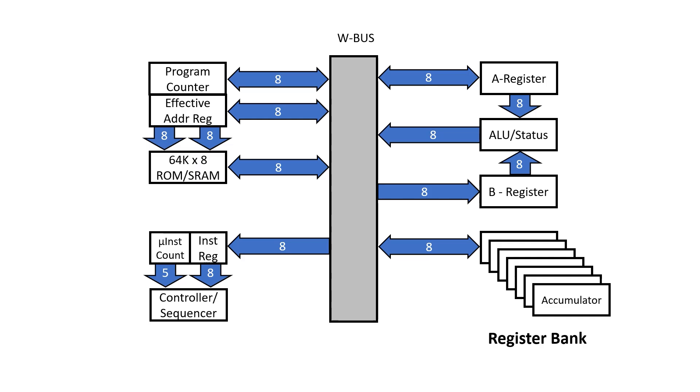In Fetch and Decode, we may need to increment the program counter, and this occurs within the program counter module itself. But both Decode and Execute may require some form of arithmetic or logic, which involves the ALU. Hence the name, Arithmetic Logic Unit.